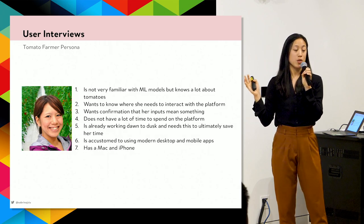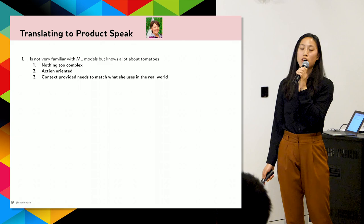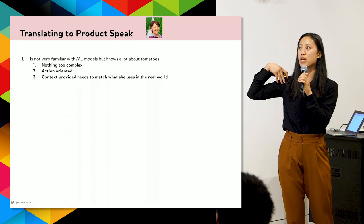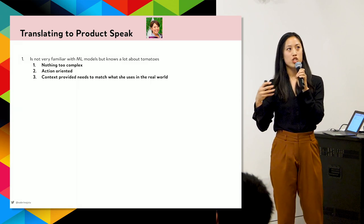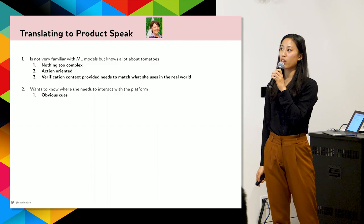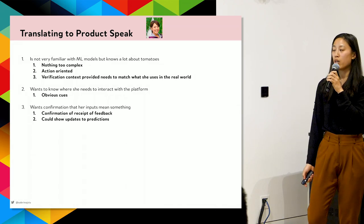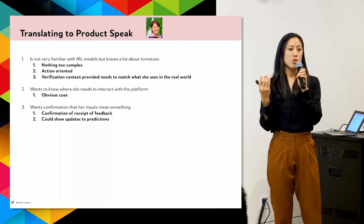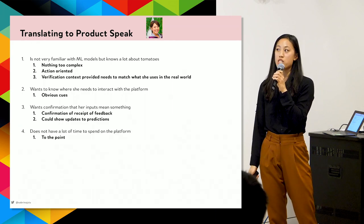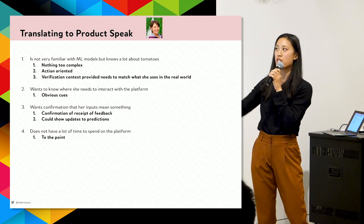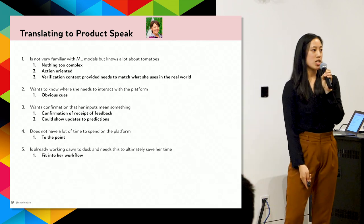What does this mean for product development? She's not familiar with ML but knows tomatoes — so nothing should be too complex, it should be action-oriented, and context should reflect what she knows in the real world. She wants obvious cues and confirmation that her inputs mean something — receipts of feedback, updates, and predictions that incentivize her to keep interacting. She has no time, so everything should be to the point and fit into her existing workflow.